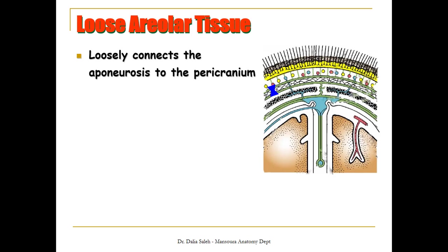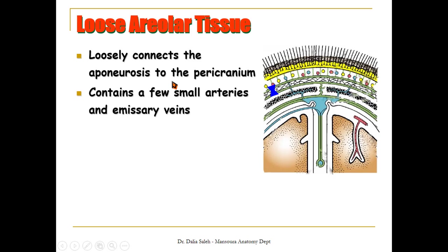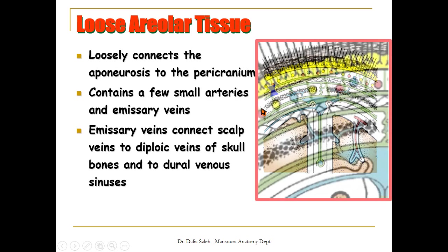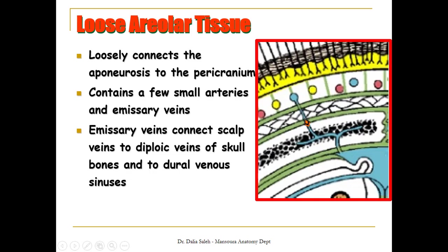The fourth layer is called the loose areolar tissue. It loosely connects the aponeurosis to the pericranium, and thus allows the movement of the upper three layers and their gliding over the pericranium. It contains small amounts of small arteries and emissary veins. The emissary veins connect the veins in the scalp to the diploic veins — the veins that lie within the skull bone — and also connect them to the dural venous sinuses inside the skull. So the emissary veins can transmit infection from the outside, from the scalp, down to the dural veins inside.